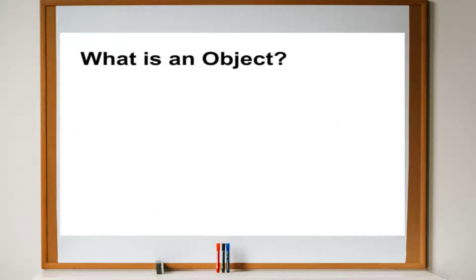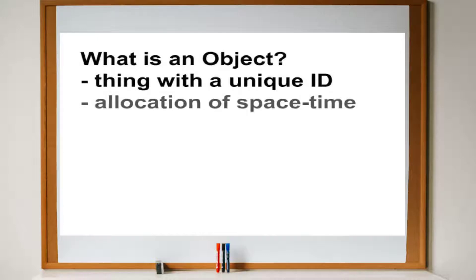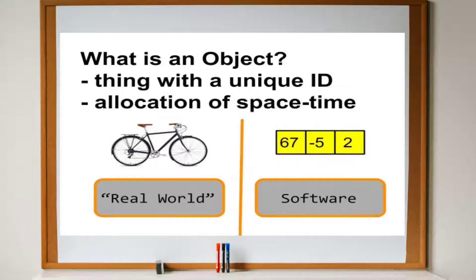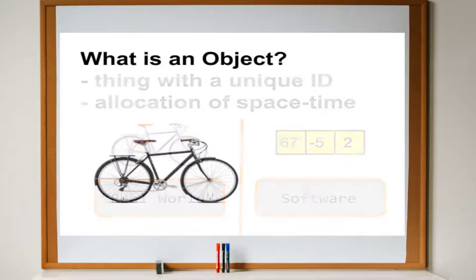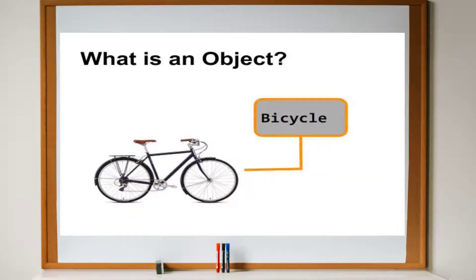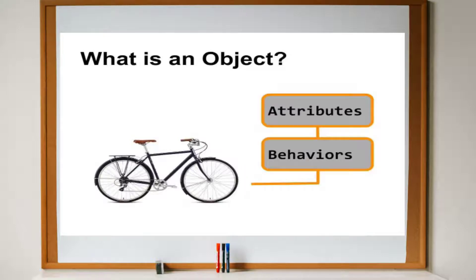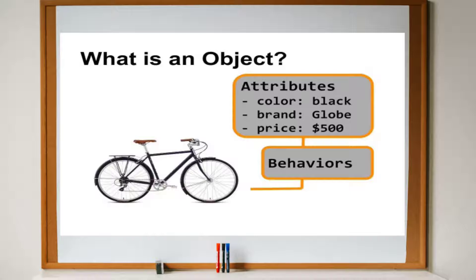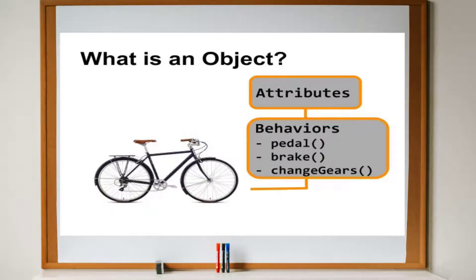In general, we can think of an object as something with a unique identity. This is true in the real world as well as in the software world. A bike, for instance, is an object with a unique identity since it occupies a unique location in space and time. Also, it possesses its own set of attributes and behaviors. Attributes may include the brand name, color, and price. Behaviors may include pedal, brake, and change gears.